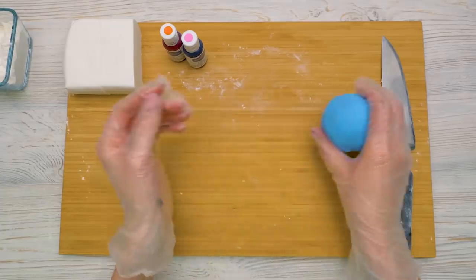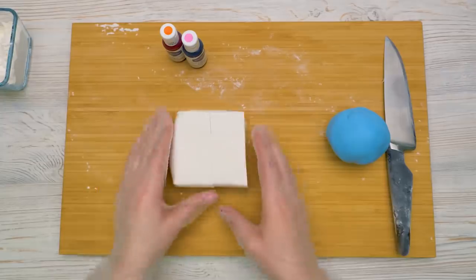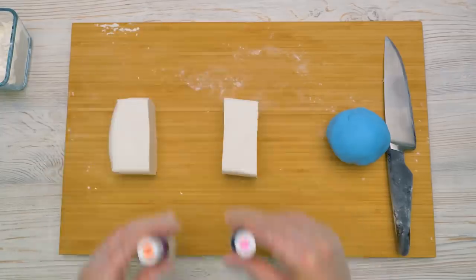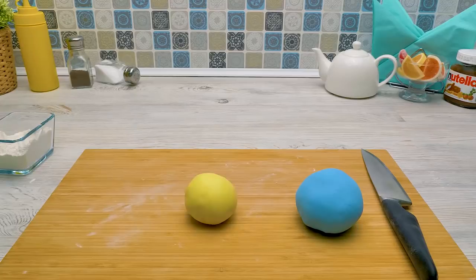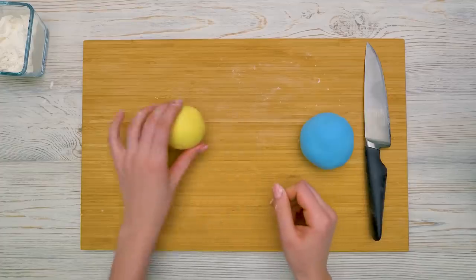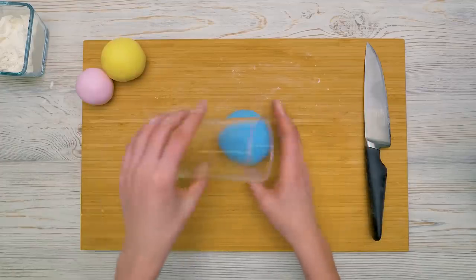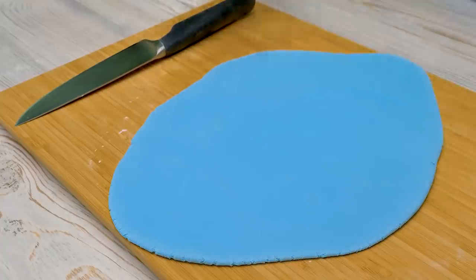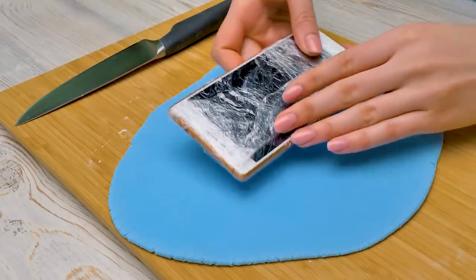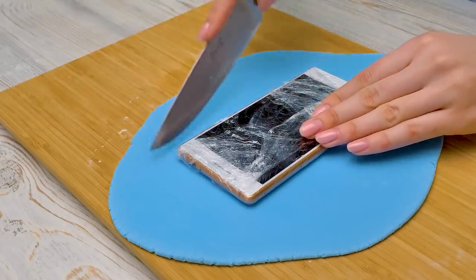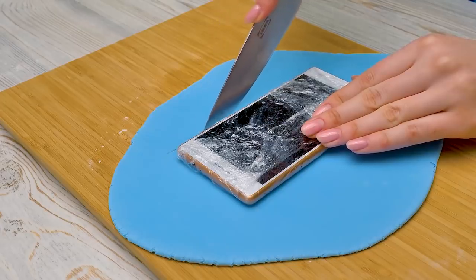This is our first color! Looks really nice! And let's repeat the same process with yellow and pink. Now we need to roll the fondant out. I'm just using a large smooth glass for it. Let's place our phone on top. Yes! It's large enough!